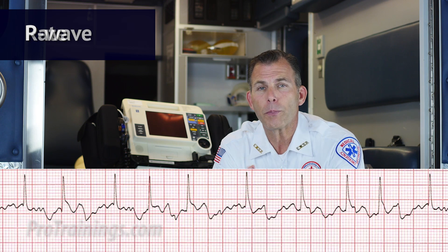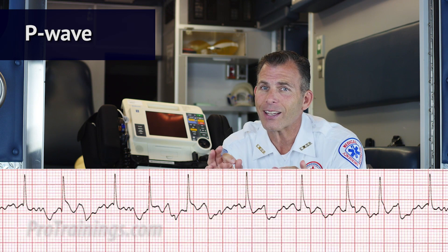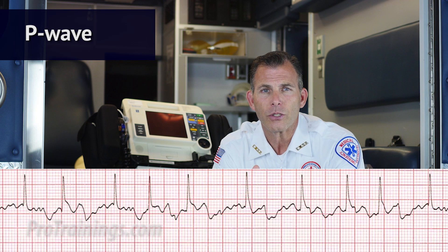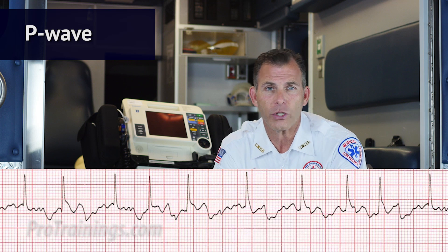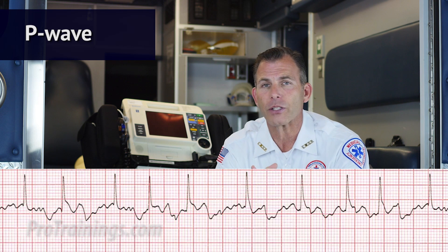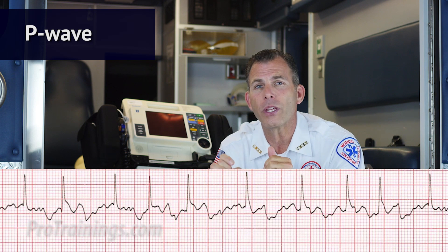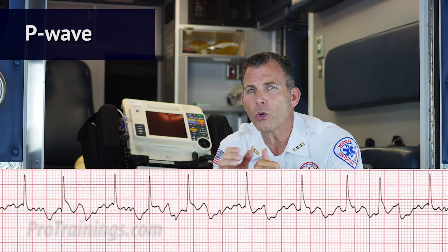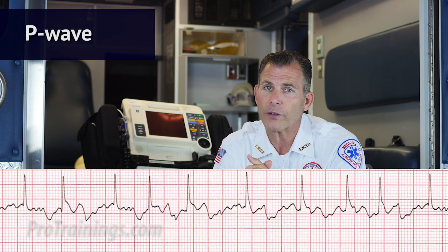Then we evaluate the P wave. Are they present? No, not in this case — the P waves are not present. Do they occur regularly? No, because there are no P waves. Is there one P wave for each QRS complex? No, there is no P wave for each QRS complex. Are the P waves smooth, rounded, and upright? No — only fibrillatory waves are seen.